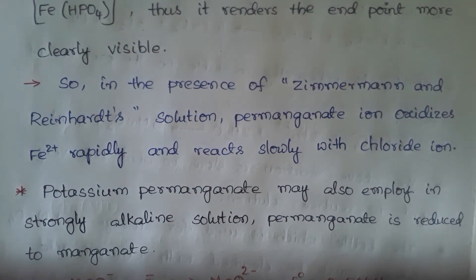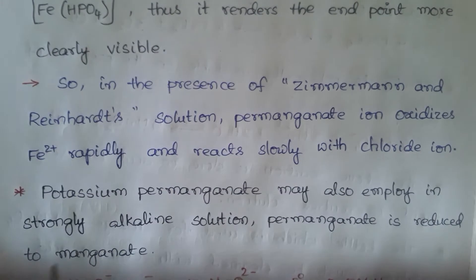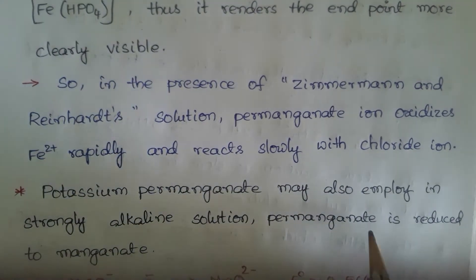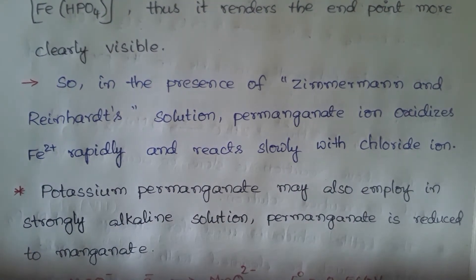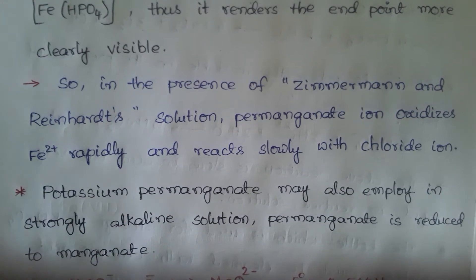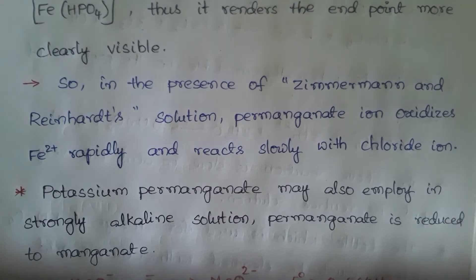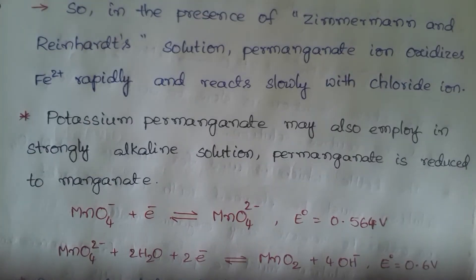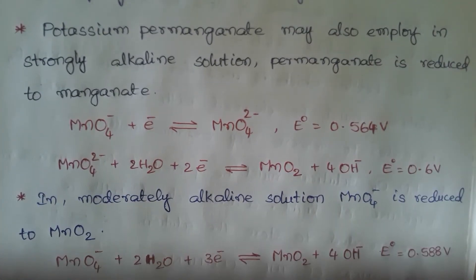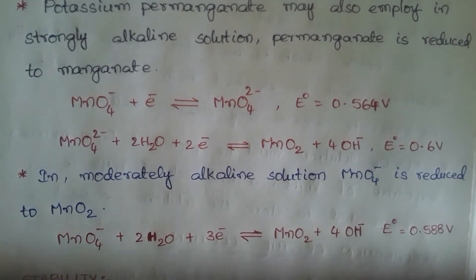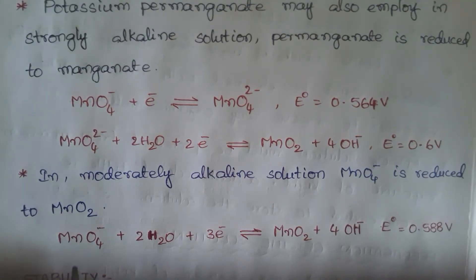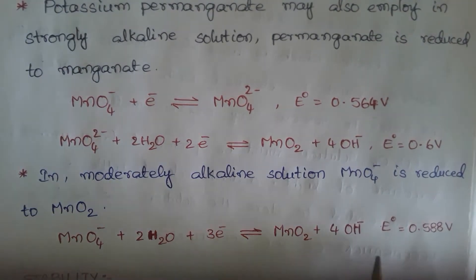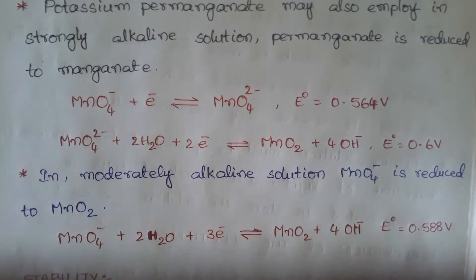Potassium permanganate may also be employed in strongly alkaline solution, where permanganate is reduced to manganate. In moderately alkaline solution, MnO4 minus is reduced to MnO2. The respective reactions and potential values apply in each case.